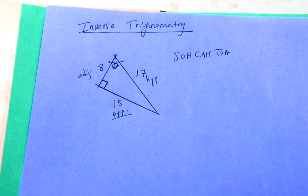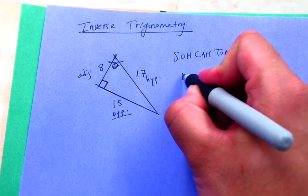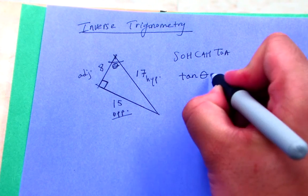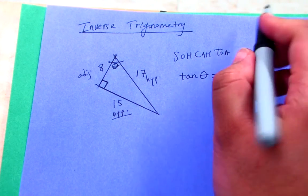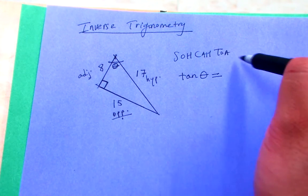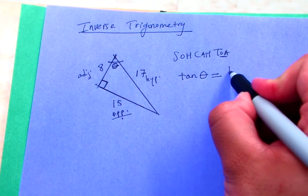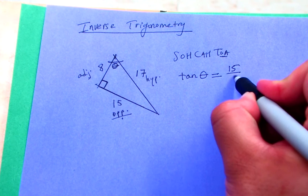So I'm going to use the tan ratio, no particular reason. So tangent of this angle, which I don't know, so I'm going to call it theta, is equal to opposite over adjacent. So we've got TOA. So opposite over adjacent would be 15 over 8.